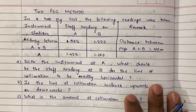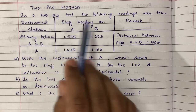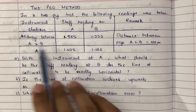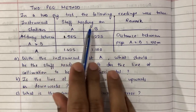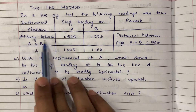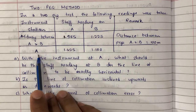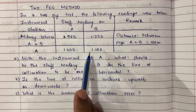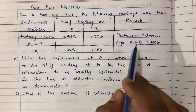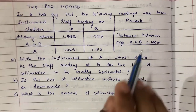This is the first numerical. In a two-peg test, the following readings were taken. The table gives instrument station, staff reading on A and B, and remark. Instrument station midway A and B gives certain readings, and instrument station at A gives other readings. In the remark column, it is given that the distance between pegs A and B is 100 meters.